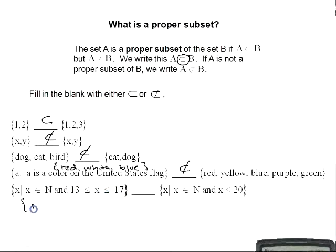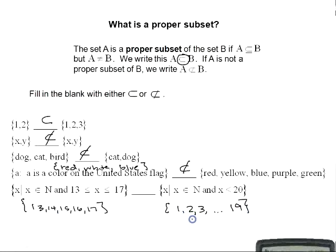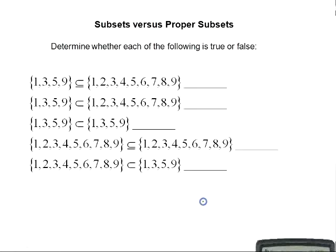The set of natural numbers from 13 to 17 — that is, {13, 14, 15, 16, 17} — is a proper subset of the set of all natural numbers less than 20 — that is, {1, 2, 3, ..., 19} — because every element of the first set is contained in the second set, and the sets are not equal.